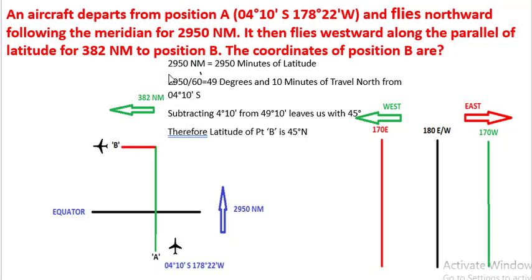The aircraft has travelled 2950 nautical miles, or 2950 minutes of latitude. So 2950 divided by 60 gives us 49 degrees and 10 minutes of travel north from 4 degrees 10 minutes south. Now initially the aircraft is travelling, it will travel 4 degrees 10 minutes and then reach 0 degrees, that is the equator.